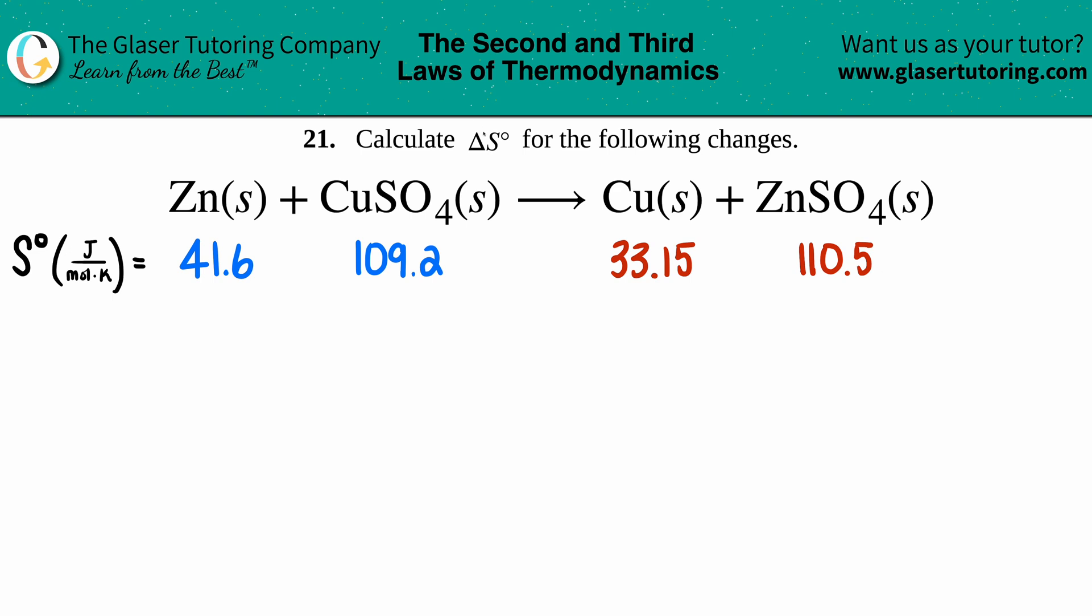Number 21: calculate the delta S notch for the following changes. And then we have the balanced equation: zinc solid plus CuSO₄ solid yields Cu solid plus ZnSO₄ solid. Okay, so what is the delta S notch?